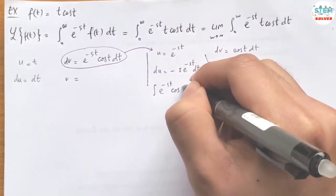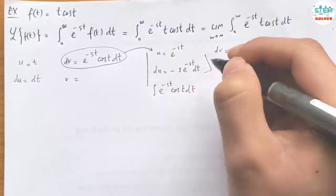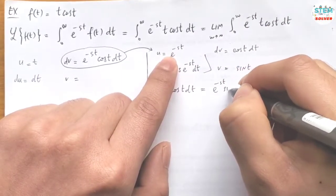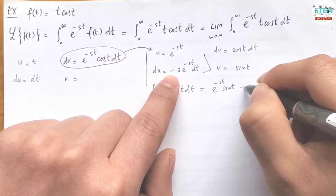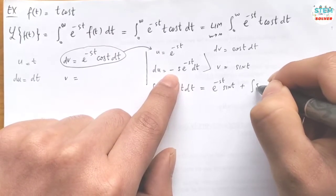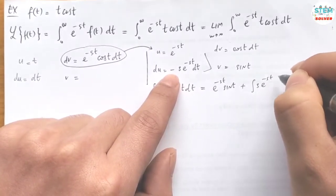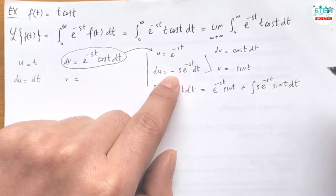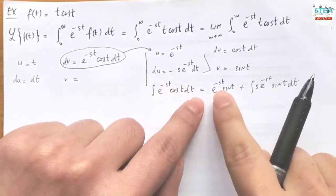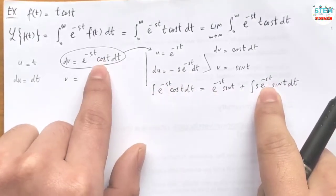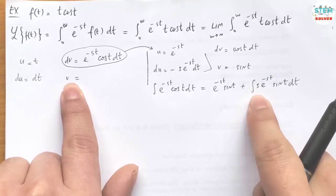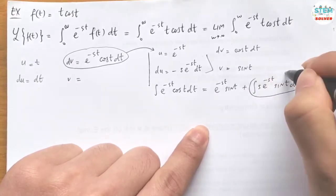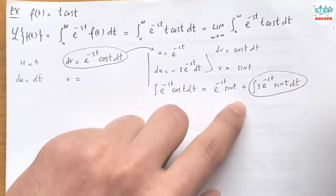So the integral of e^(-st)·cos(t) dt is computed. We still have a remaining integral inside, so we have to get rid of it. We'll use integration by parts one more time.